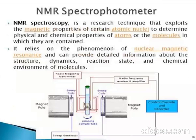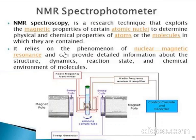NMR spectroscopy is a research technique that exploits the magnetic properties of certain atomic nuclei to determine the physical and chemical properties of the atoms or molecules in which they are contained. It relies on the phenomenon of nuclear magnetic resonance and can provide detailed information about the structure, dynamics, reaction state, and chemical environment of molecules. The instrument includes a magnet, transmitter, radio frequency amplifier, and recorder.